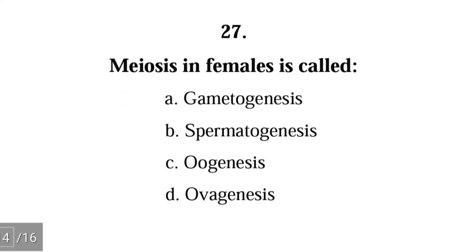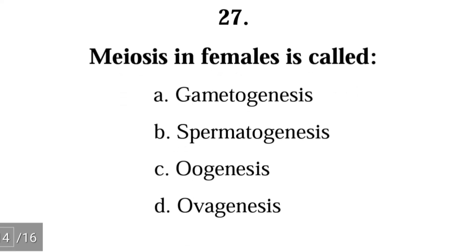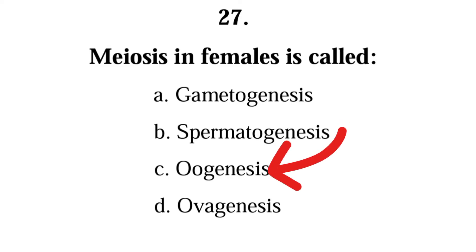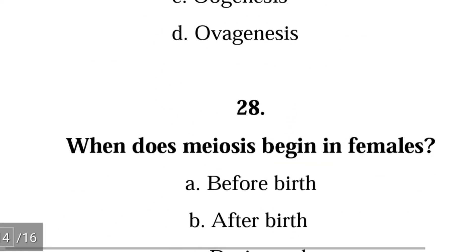Question 27: Meiosis in females is called — A. gametogenesis, B. spermatogenesis, C. oogenesis, D. overgenesis. The correct answer is C; meiosis in females is called oogenesis.